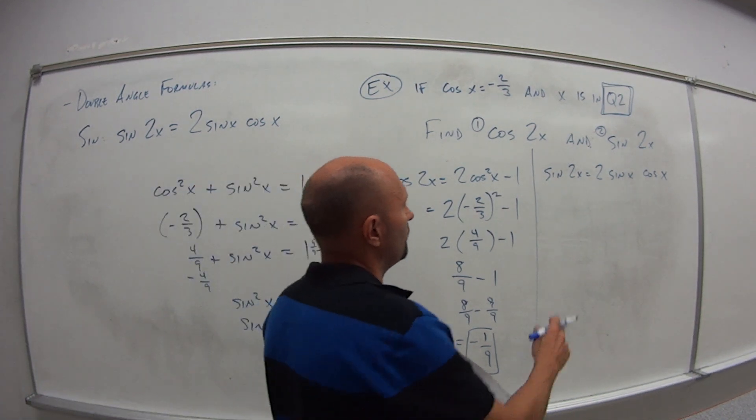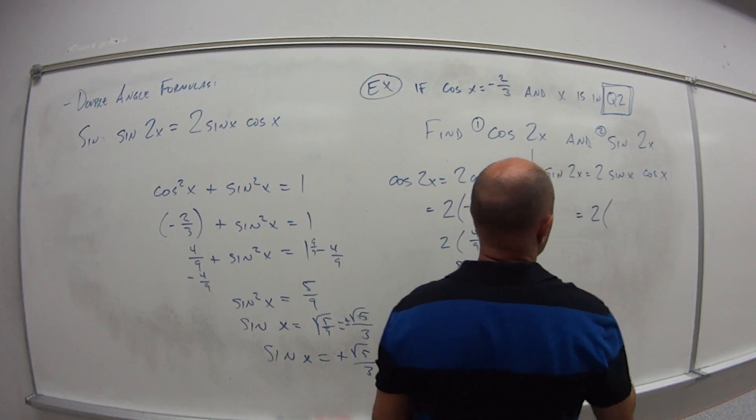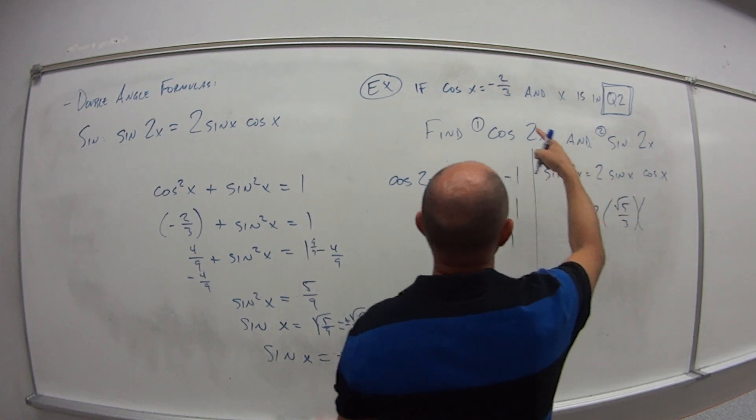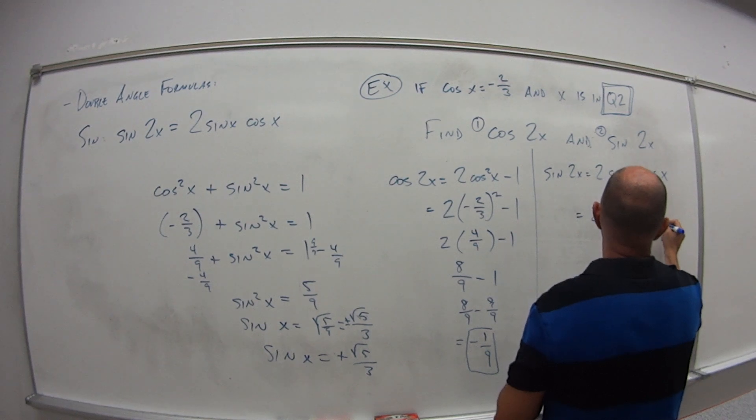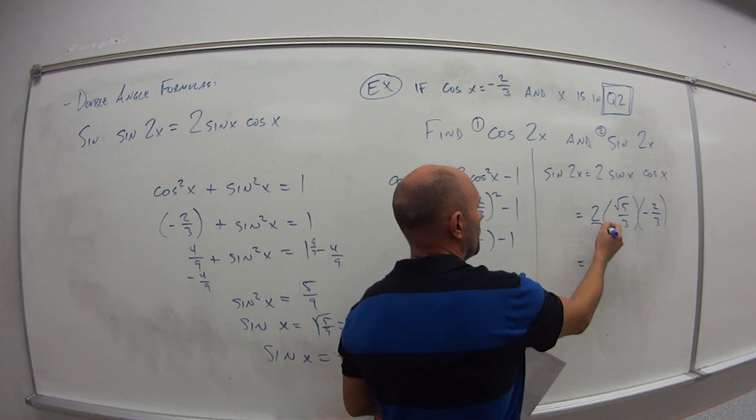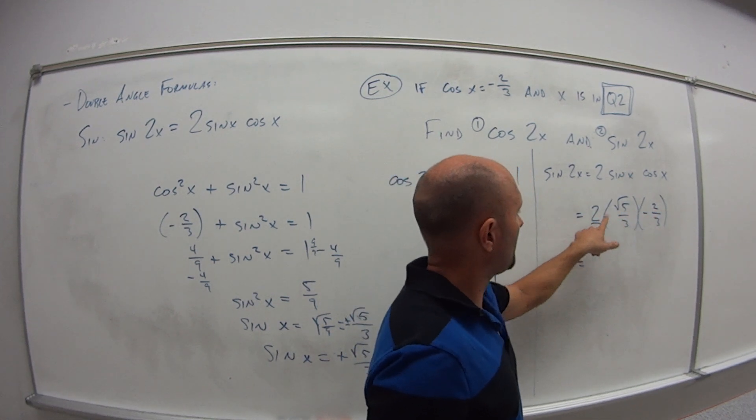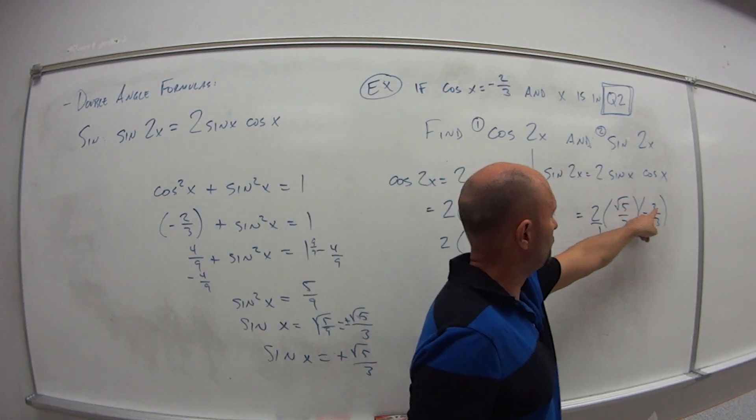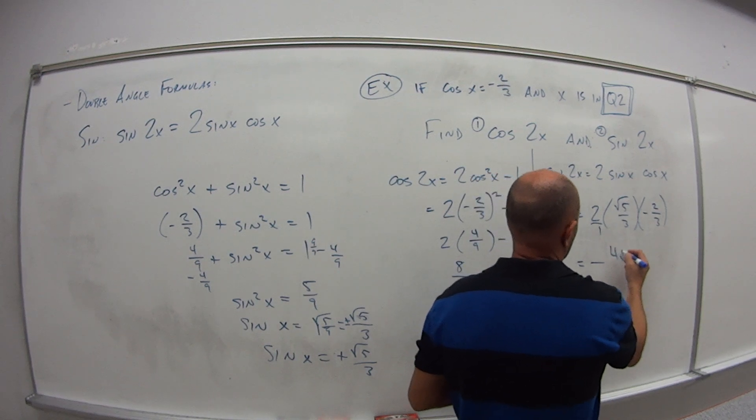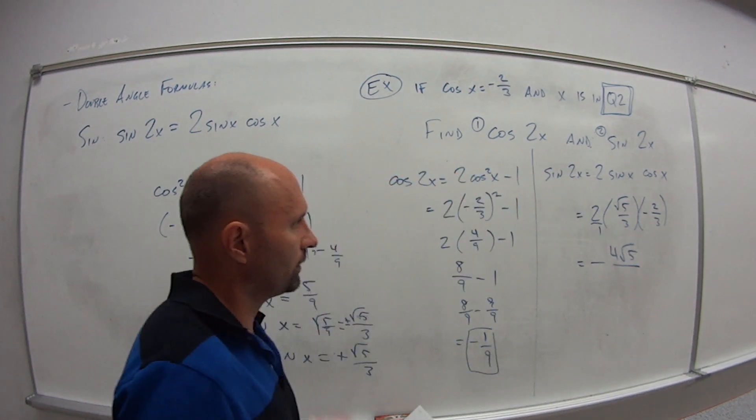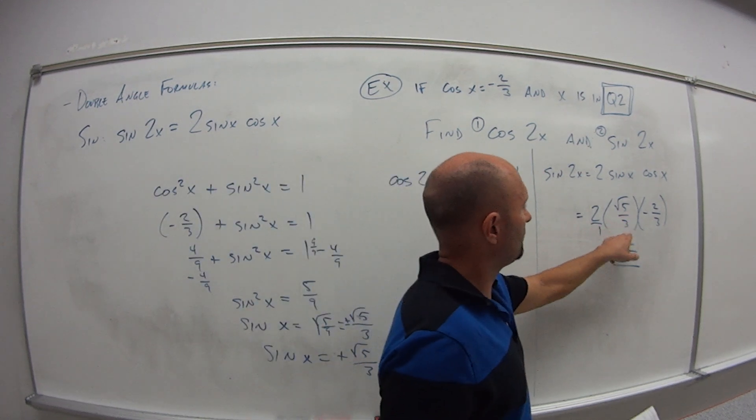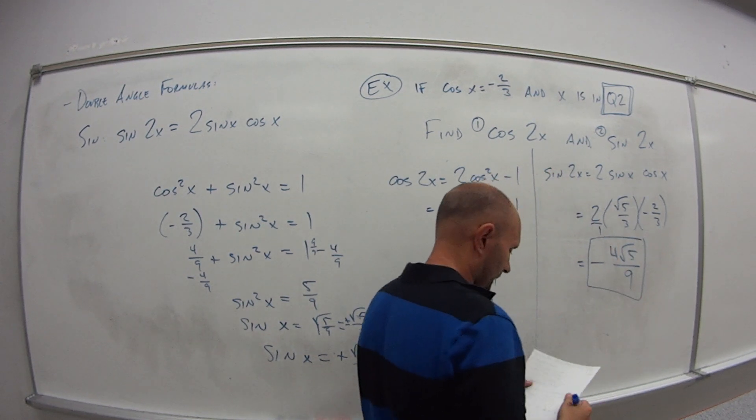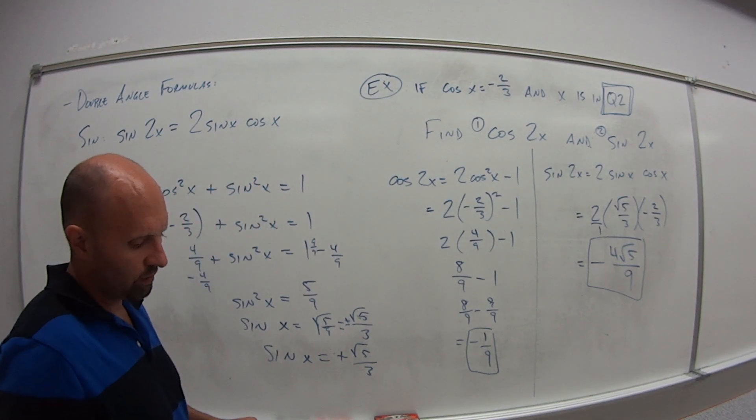So now I can plug these into this formula. So sine of 2x is 2 times sine of x which is square root of 5 over 3 times cosine of x, which is negative 2/3. So this is like 2 over 1. If I multiply all the numerators, first I have positive times positive times negative, which means my answer is going to be negative. And then 2 times 2 is 4 times square root of 5. So I get 4 square root of 5 in the numerator. And then the denominator is 1 times 3 times 3 which is 9. So my final answer for sine of 2x would be negative 4 square root of 5 over 9.